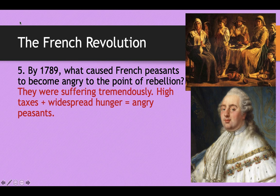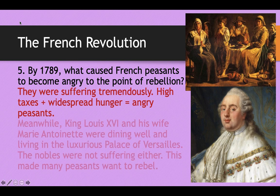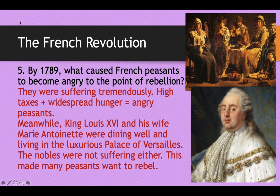High taxes plus widespread hunger equals angry peasants. They were suffering tremendously — they didn't have enough food to eat and didn't have enough money to buy food because they were taxed so heavily. Meanwhile, King Louis XVI and his wife Marie Antoinette were dining well, living in the luxurious Palace of Versailles, and the nobles really weren't suffering either. It was only the peasants, who were 97% of the population.